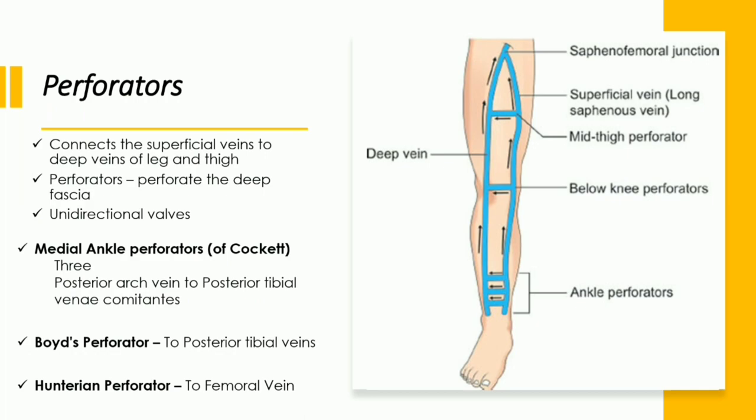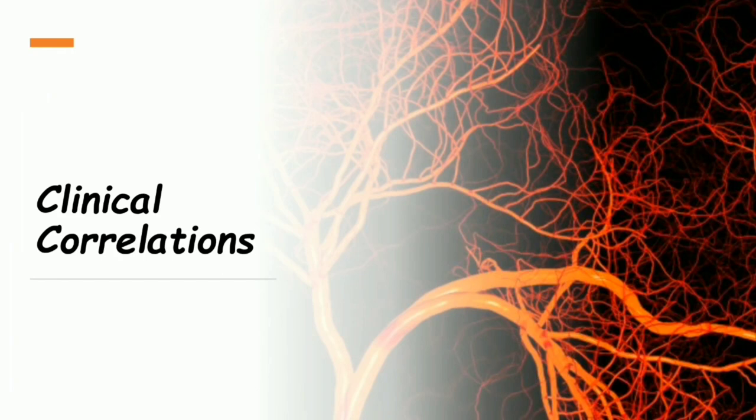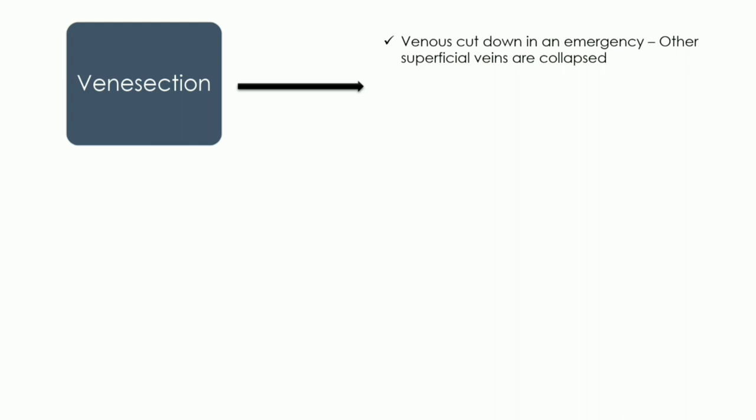Now let's see the clinical aspects. First, venous cutdown: suppose we have a patient in an emergency and need to supply a drug intravenously, and all other superficial veins are collapsed. We can choose the subvenous vein to provide intravenous infusion, as it is very superficial. This is done in front of the medial malleolus. At that region, the subvenous vein is accompanied by the subvenous nerve, so we must take care not to damage this nerve when giving the IV infusion.